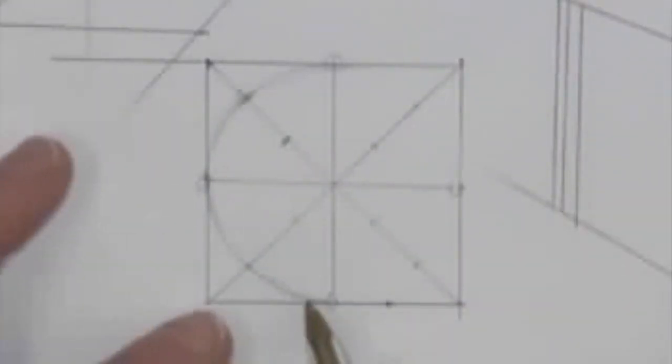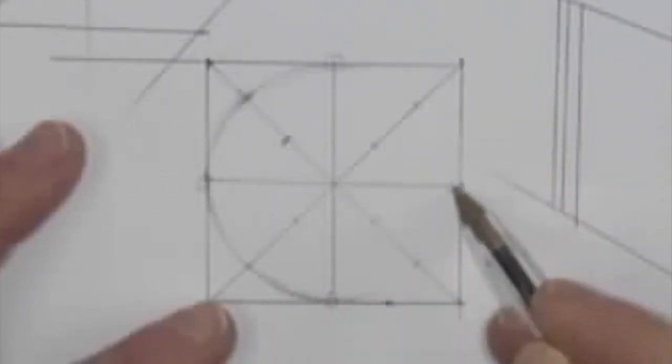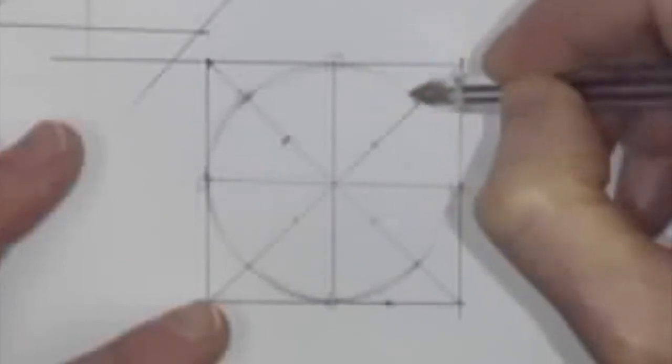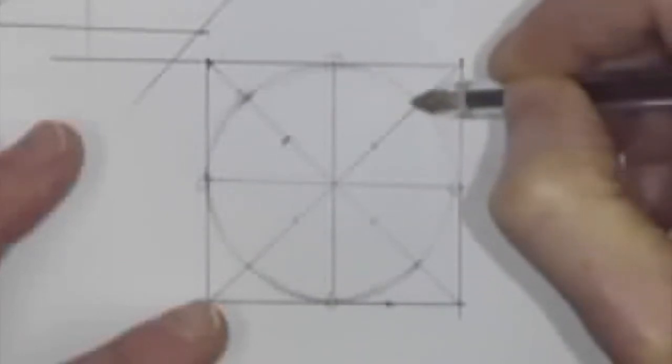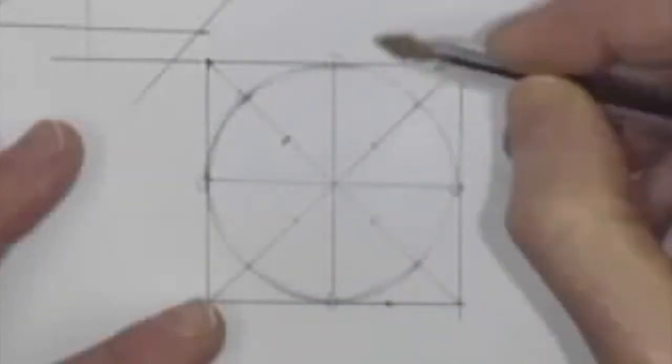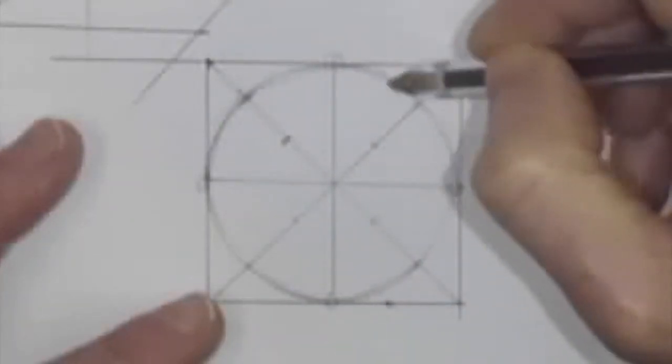Now, the part that can go wrong is here, if you try to touch too much of the outside box. So just skim past it if you can, because it can look not very round if you do that. And if you work really lightly first, it makes it easier.